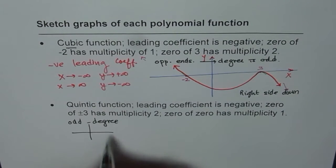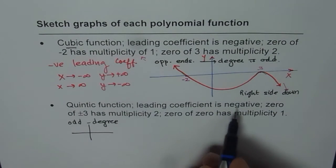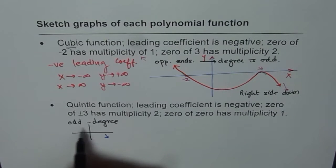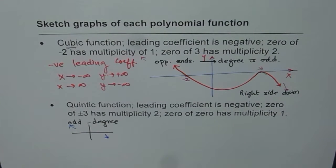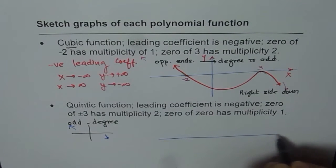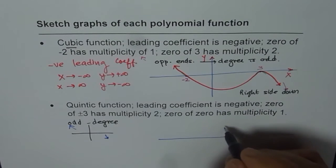if you see your graph, leading coefficient negative means right side down. Odd means opposite ends. So that is the end behavior which you should mark. Now, let's just sketch it as we did last time.